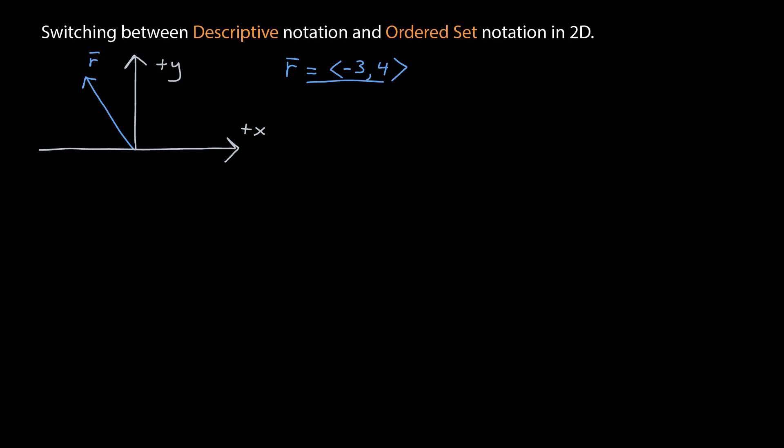Now let's talk about switching between the descriptive and ordered set notation. For simplicity, we're going to stay in 2D.